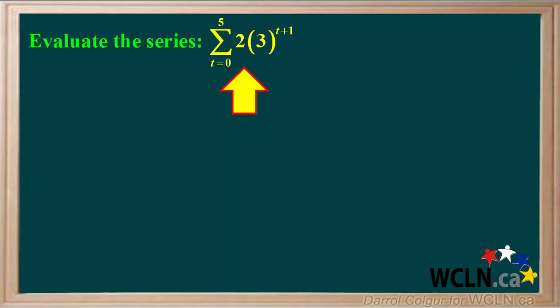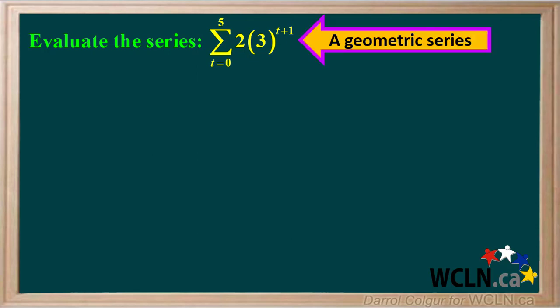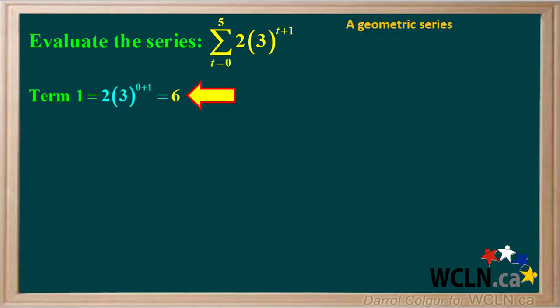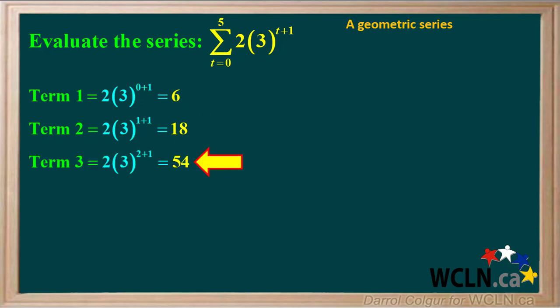Let's do another example. We're given this sigma notation and asked to evaluate it, which means we need to find the sum of the series it represents. There is a variable in an exponent in the function, which tells us this is a geometric series. For term 1, we put in 0 for t, giving us 2 times 3 to the power 1, which equals 6. For term 2, we put in 1 for t, giving us 2 times 3 to the power 2, which equals 18. For term 3, we put in 2 for t, giving us 2 times 3 to the power 3, which equals 54.